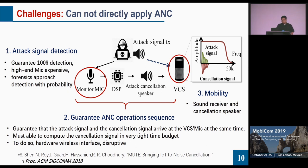The major challenge is guaranteeing the ANC operation sequence. We must ensure that the attack signal and the cancellation signal arrive at the VCS microphone at the same time, which means we must compute the cancellation signal within a very tight time budget. To do so, we would need to develop some hardware wireless interface — a disruptive solution that may not be applicable to already deployed VCSs.